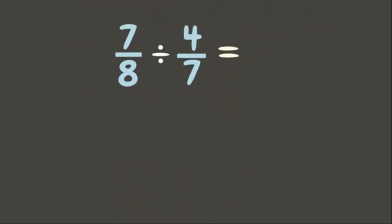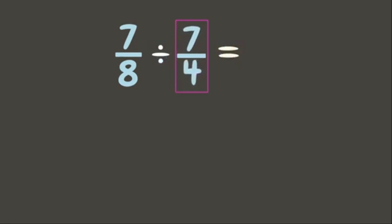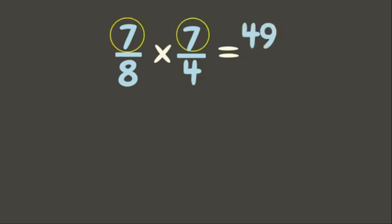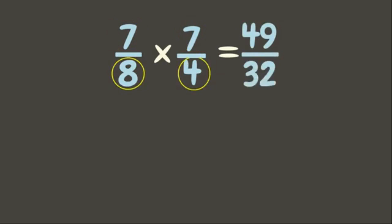Let's try seven-eighths divided by four-sevenths. Our first step is to get the reciprocal of the divisor. Now let's change division to multiplication and multiply. Seven times seven is forty-nine; eight times four is thirty-two.